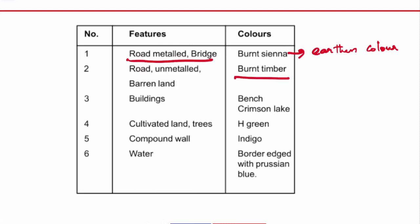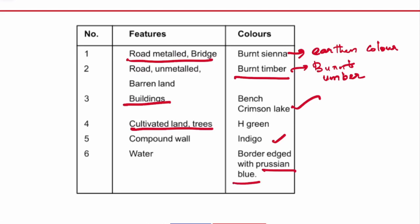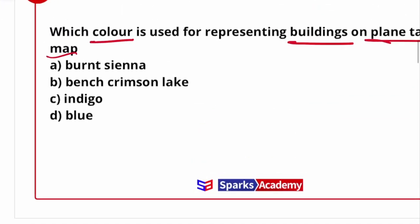We use burnt umber — this earthen colour shade represents barren land. Next, buildings are represented by crimson lake, which is a reddish shade. Cultivated land and trees are represented in green colour. Compound walls are represented in indigo, which is a type of blue colour. Water is represented bordered and edged with Persian blue. Buildings are represented on crimson lake — that is the correct answer.